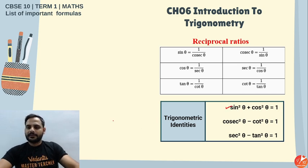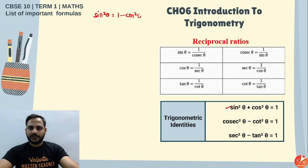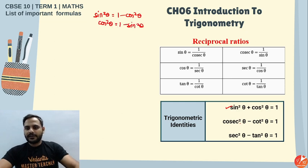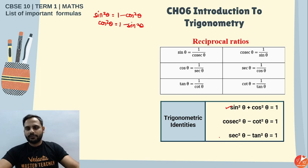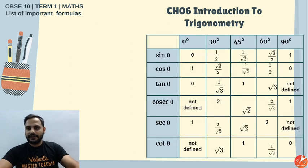Trigonometric identities: sin²θ + cos²θ = 1. From this: sin²θ = 1 − cos²θ and cos²θ = 1 − sin²θ. Also: cosec²θ = 1 + cot²θ and sec²θ = sec²θ − 1 (i.e., tan²θ = sec²θ − 1). Remember all forms of these identities.